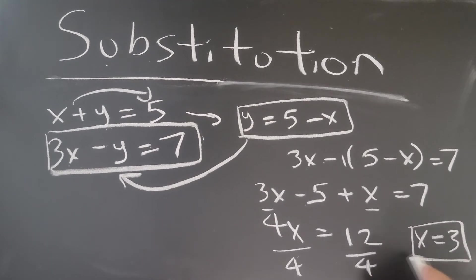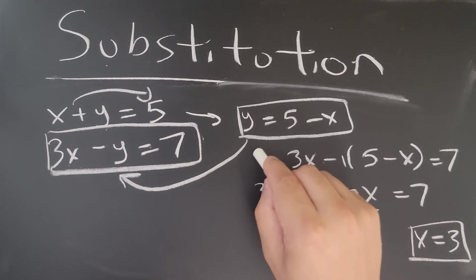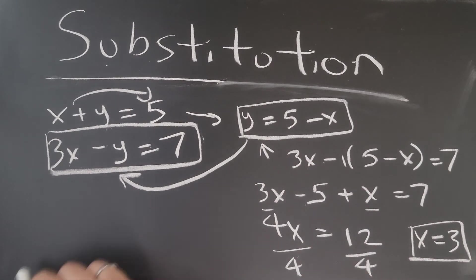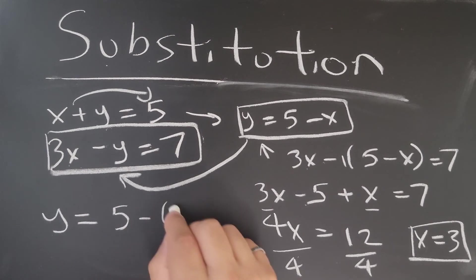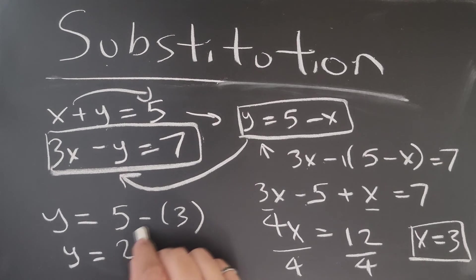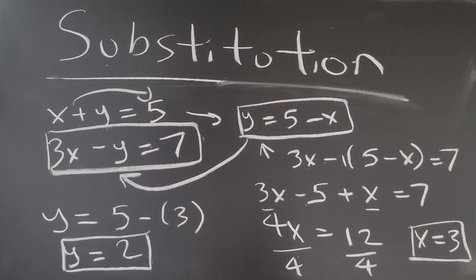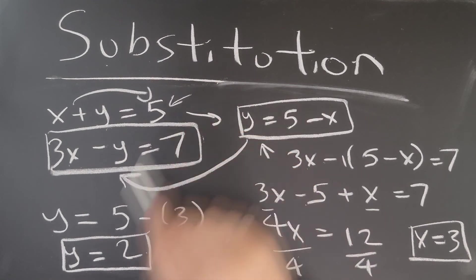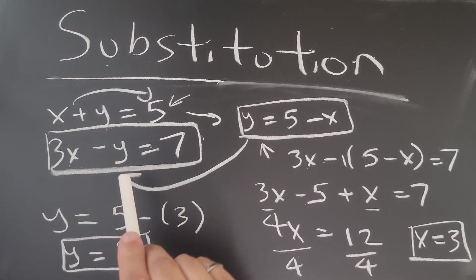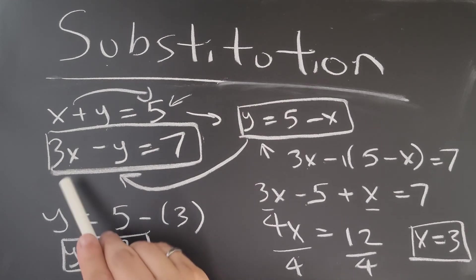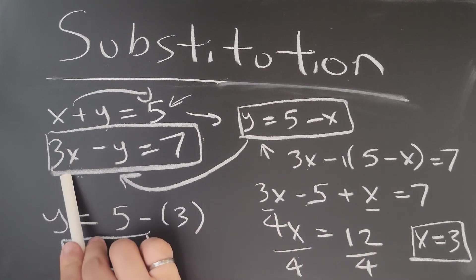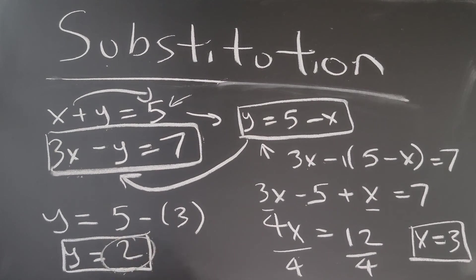Now all I have to do is put x back into the formula, and I get y equals 2. You can actually check your substitution: plugging x and y back into the original formulas, 3 and 2 does equal 5. Plugging into the other equation: 3x minus y equals 7, so 3 times 3 is 9, minus y which is 2, gives 7. Confirmed.